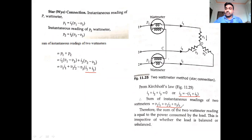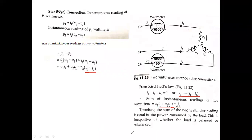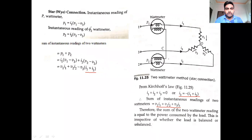The sum of two wattmeter readings equals the power consumed by the load, irrespective of whether the load is balanced or unbalanced. Whether the load is balanced or unbalanced, the sum of wattmeter readings equals the power consumed by the individual load. This applies to the star connected three-phase three-wire system.